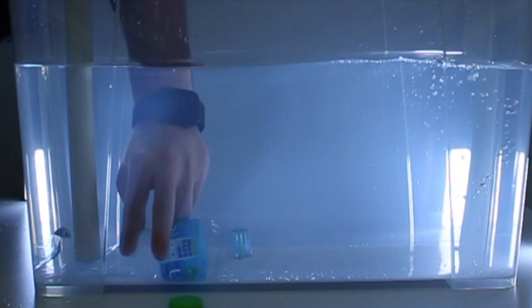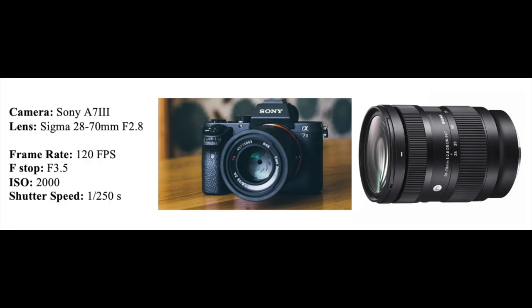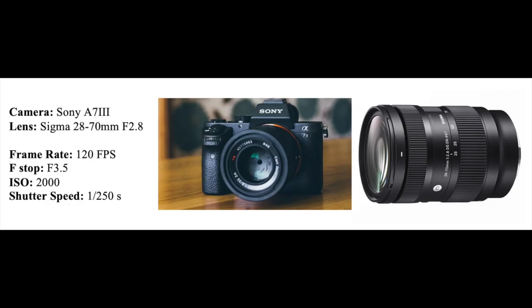I was able to amplify the settings on the Sony camera to better visualize the phenomenon. As can be seen, the frame rate was increased to 120 frames per second as well as the ISO to 2000. Once the vortex is formed, it travels a long distance because of the angular momentum caused by the system.